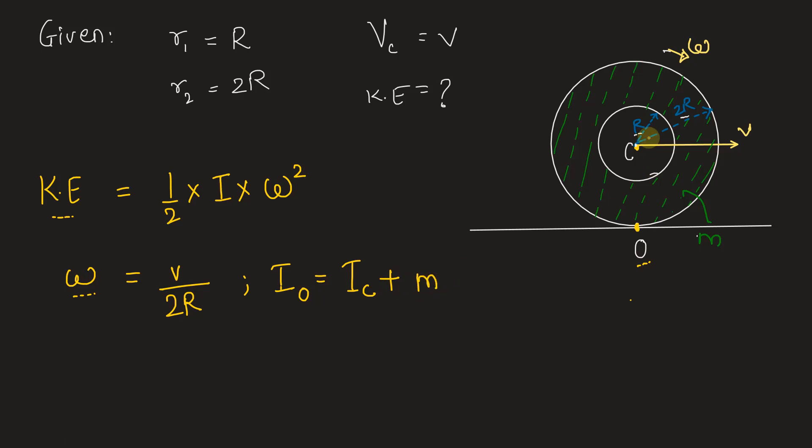So, we will do plus M into the distance between O and C, that is OC squared. Let's substitute IC is M into R1 square plus R2 square by 2 plus M into OC square.